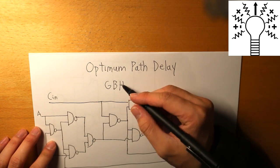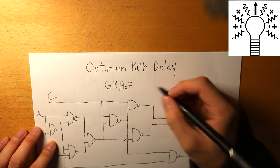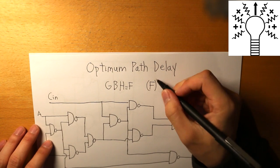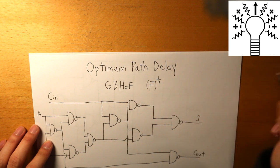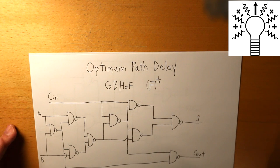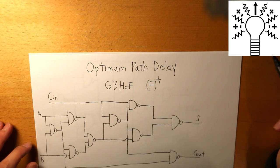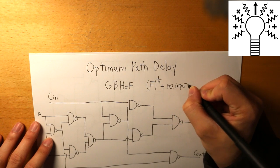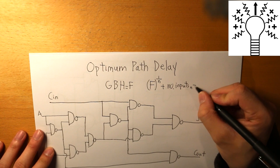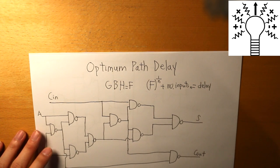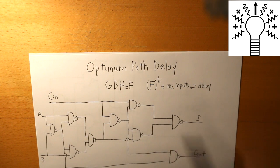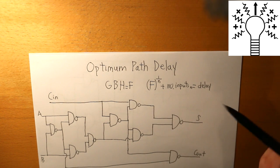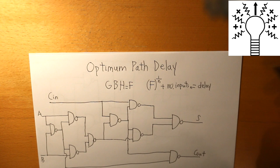What we do is take the effort delay F, put it to the power of one over your number of stages N, and then add the number of inputs for each stage — that would be what your delay is going to be. So it seems pretty complicated: we have to first compute the gate, the branches, and then your output over your input to get your effort delay, and then do this computation again to finally get what your delay is.